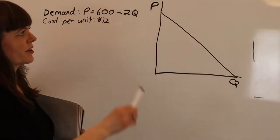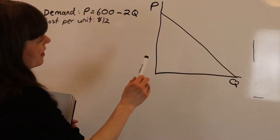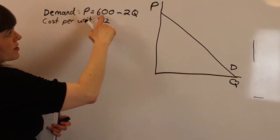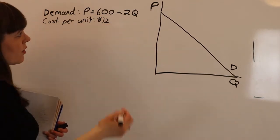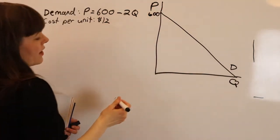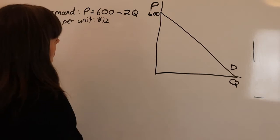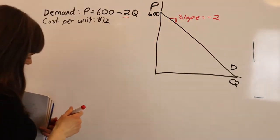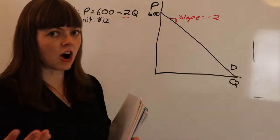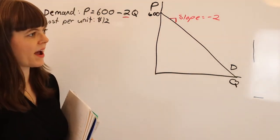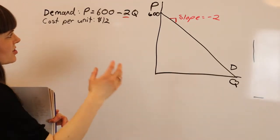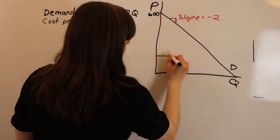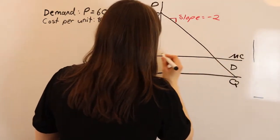Now I'd like to connect this with a graphical version of the monopoly model. We have a demand curve that is linear, given by the equation: price equals 600 minus 2Q. So there's an intercept of 600, and the slope of the demand curve is negative 2. This firm has a cost of $12 per unit — a very simple firm that just needs to pay a fixed amount per unit produced. So we'll put our marginal cost onto this graph: marginal cost equals $12.